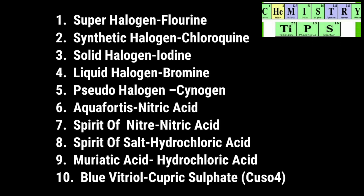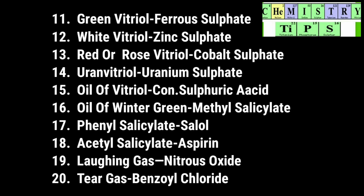What is blue vitriol? We know that it is cupric sulfate, or CuSO₄. Next, green vitriol — that is ferrous sulfate. Next, white vitriol — that is zinc sulfate. Next, red or rose vitriol — that is cobalt sulfate. What do you mean by uranium vitriol? Correct answer: uranium sulfate is known as uranium vitriol.